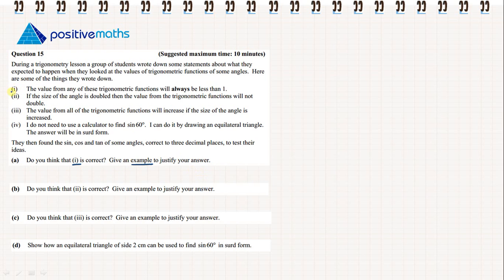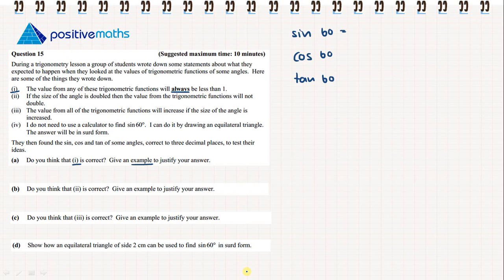So let's read statement 1 again: the value from any of these trigonometric functions will always be less than 1. We need to check whether this is always the case, so we'll find the sine, cosine and tan of 60 degrees. Going to our calculator and rounding to three decimal places: sine of 60 degrees is 0.866, cosine of 60 degrees is 0.5, and tan of 60 degrees is 1.732.